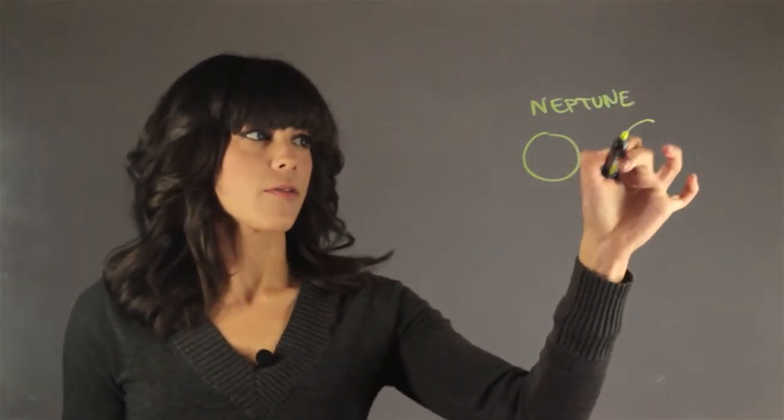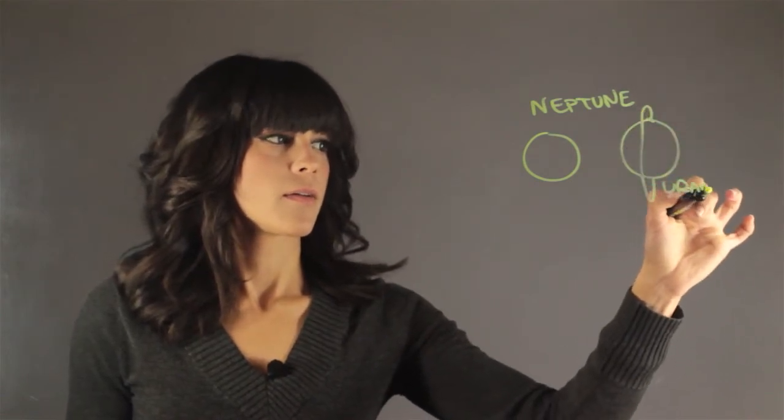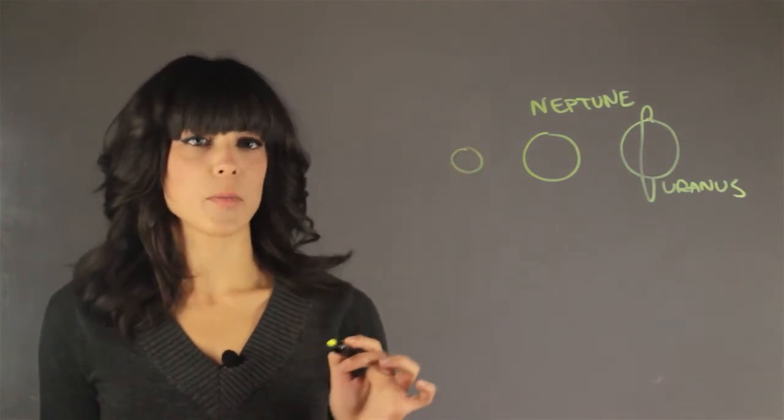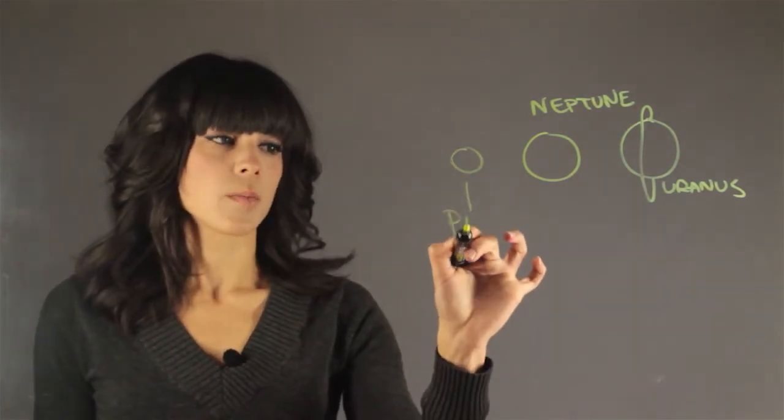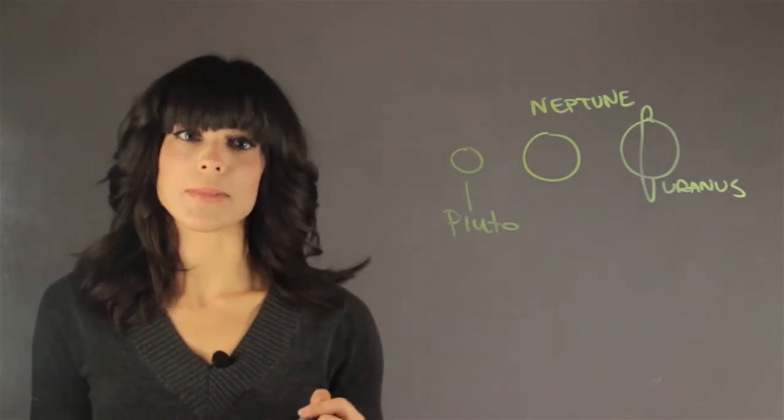And in fact, we have Uranus on this side, and on this side we actually don't have a planet anymore. This is Pluto, but it's no longer a planet.